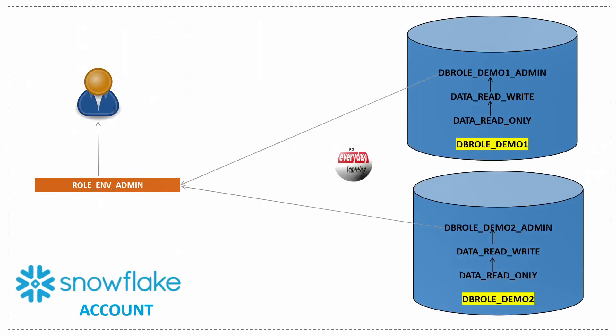For this demo we are going to create a setup in which we have two different databases, and each database has multiple database-level roles in a hierarchy — the read role is assigned to read-write, and read-write is assigned to the admin role. The admin role is then assigned to an account-level role. The account-level role 'environment_admin' resides outside the database; all the other roles inside the database are database-level roles, which are tagged to the account-level role, which in turn is tagged to the end user.